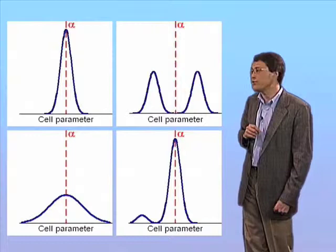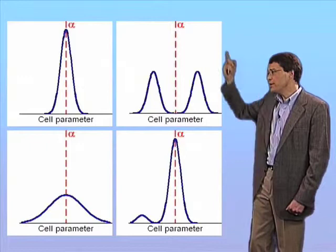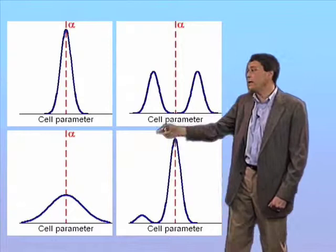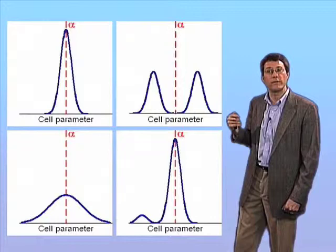My point here is that in these four different populations that I've illustrated, the average value alpha is exactly the same for all four populations, and yet clearly these are very different populations of cells. This average value alpha could represent a simple narrow Gaussian distribution, or a broad Gaussian distribution. It could even represent a bimodal distribution of cells, in which the average value, in fact, is not represented by any individual cell within the population whatsoever.